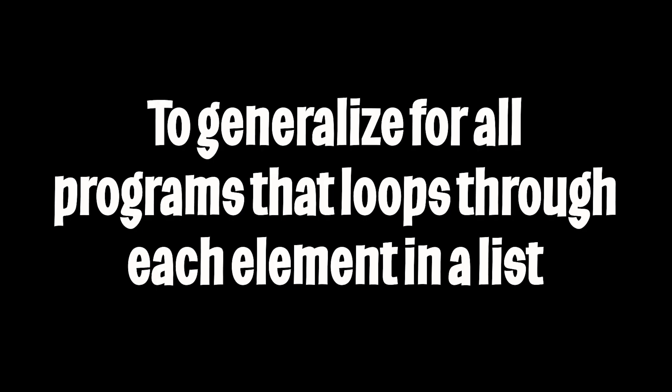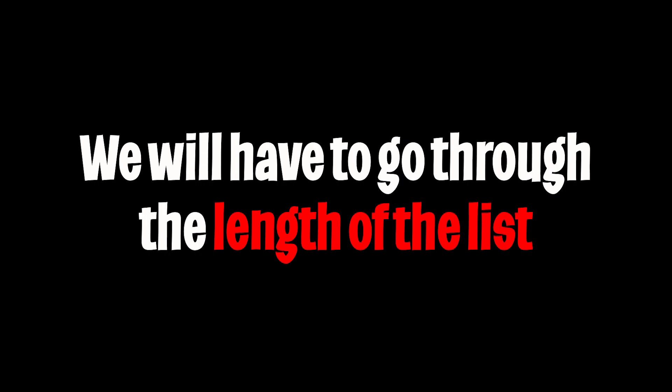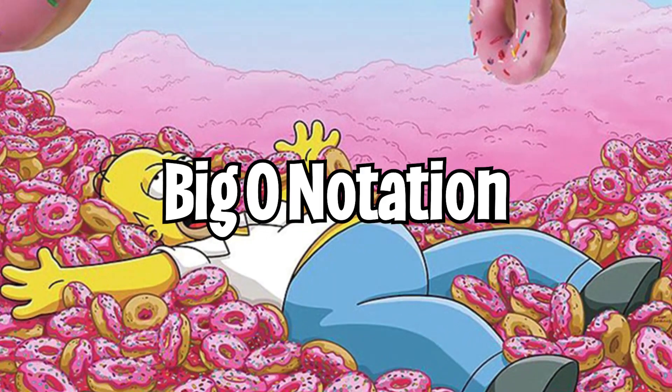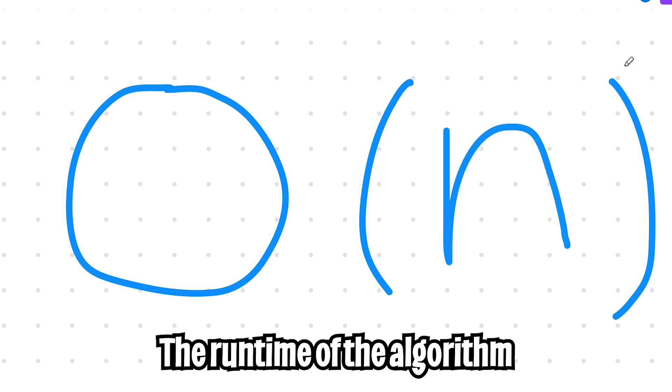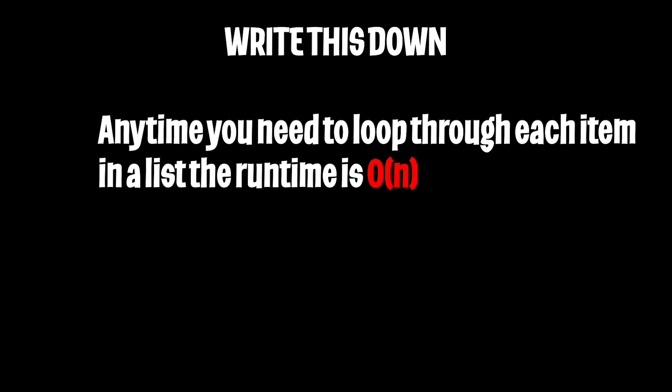So to generalize this for all cases where we want to search for a number in a list, we can say that in the worst case it will be the length of the list. To write this in Big O notation, we would just write a big O followed by parentheses, and inside it we will put N, which represents the total runtime of this algorithm. One easy way to remember this is that anytime you have to loop through each item in a list, the runtime of the program would be Big O of N.